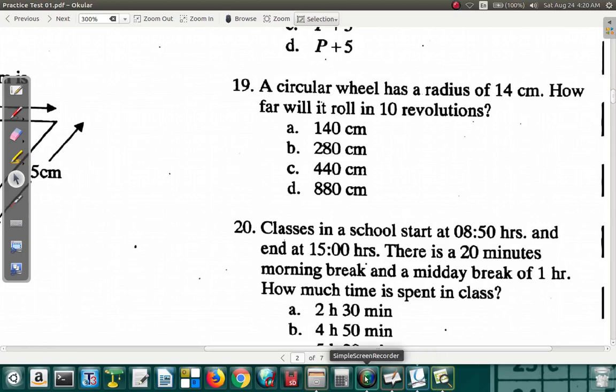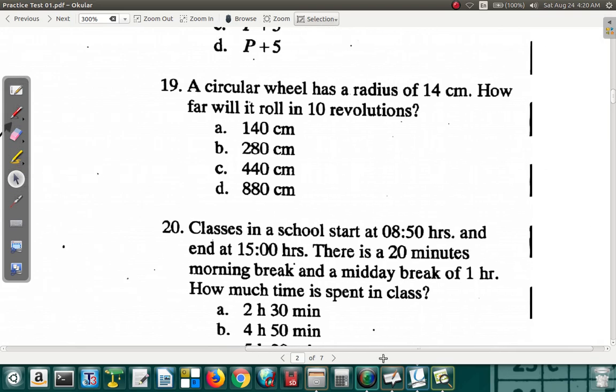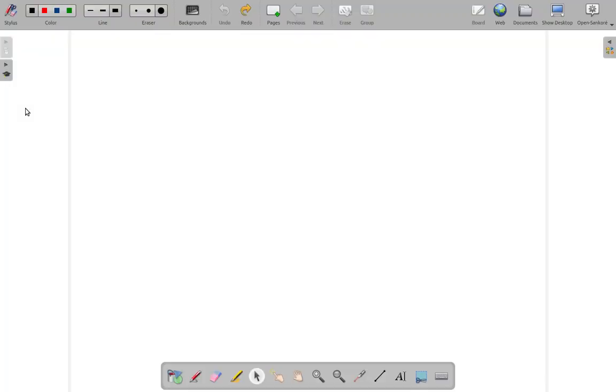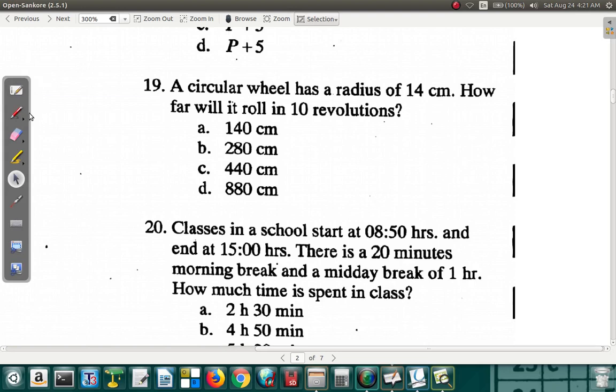Question 19. A circular wheel has a radius of 14 centimeters. How far will it roll in 10 revolutions? Let's see. The circular wheel. Let's get the circular wheel here.